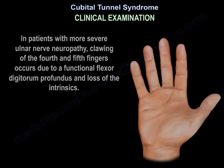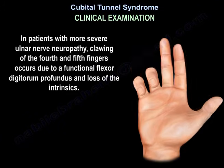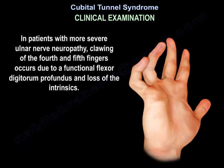In patients with more severe ulnar nerve neuropathy, clawing of the fourth and fifth fingers occurs due to functional loss of the flexor digitorum profundus and loss of the intrinsics.